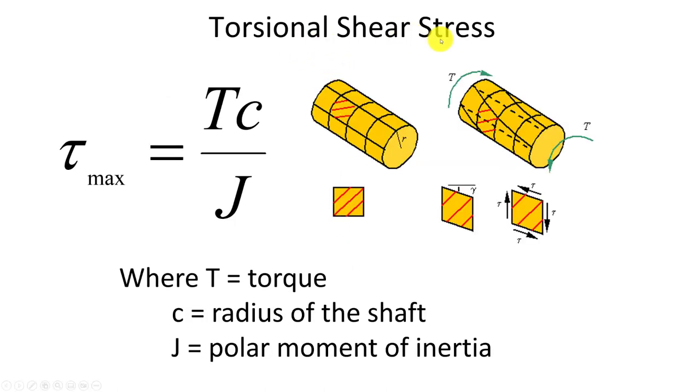Torsional shear stress is represented by TC over J. This is an equation you should remember, and we think of it as tau max. Usually we just say tau equals TC over J, but that is the maximum stress on the outer portion of this diameter. T is our torque, which we're trying to find in lab. We can measure the radius of the shaft, and then we need to talk about J, the polar moment of inertia.